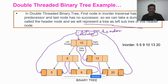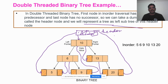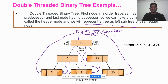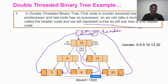This is called the double threaded binary tree. If the first node does not have any inorder predecessor, or the last node does not have any inorder successor, in such case you create a dummy node or header node before the root node. The left pointer can represent the entire tree. The first node will be connected to the left pointer of the header node, and the last node will be connected to the right pointer of the header node.